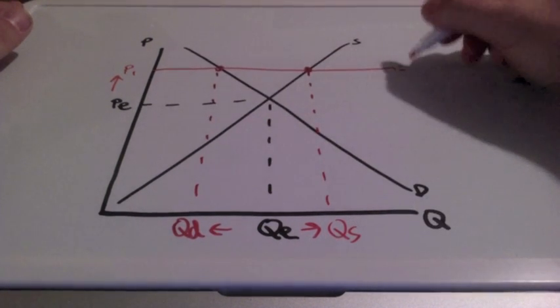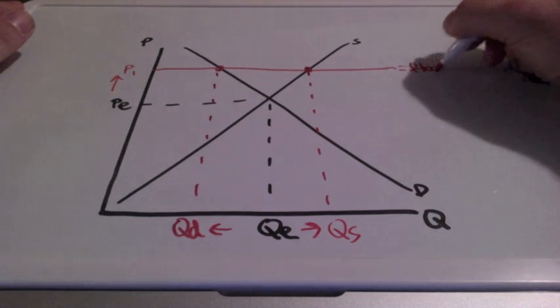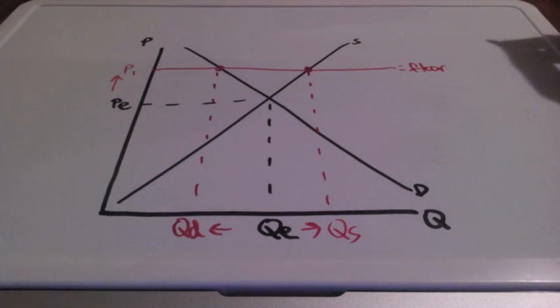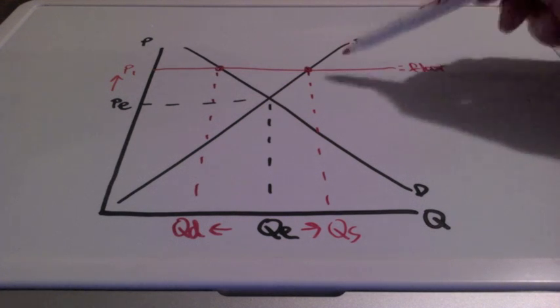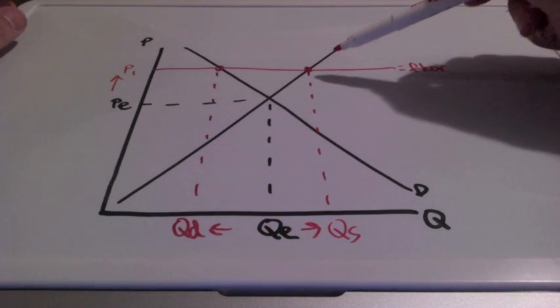This line is referred to as a price floor and for it to be binding or effective, it must be set above equilibrium price.